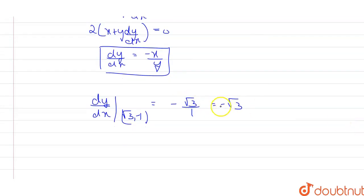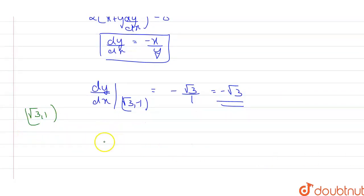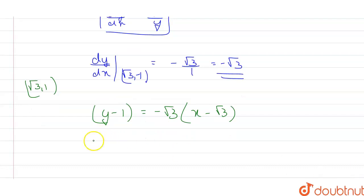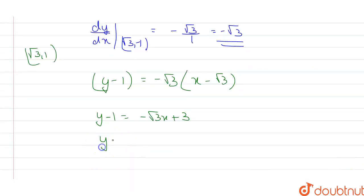Now I have the slope of the tangent as −√3 and the point (√3, 1). Using point-slope form: y − 1 = −√3(x − √3), which gives y − 1 = −√3x + 3, so y + √3x = 4. This is the equation of the tangent.